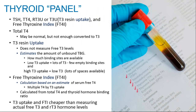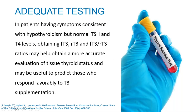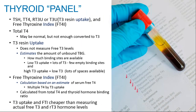The free T3 to reverse T3 ratio has been discussed in the literature — an article by Schwartz and Holtorf suggests this ratio may help obtain a more accurate evaluation of thyroid tissue status. However, you must be lab-specific when using a ratio, because labs use different normal ranges for both free T3 and reverse T3. If the normal ranges differ between labs, the ratio will differ. So any specific ratio cited by a clinician like Dr. Holtorf applies only to the lab he uses.